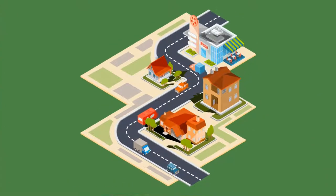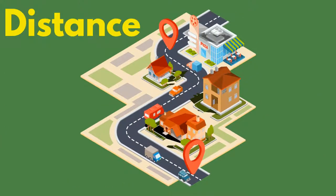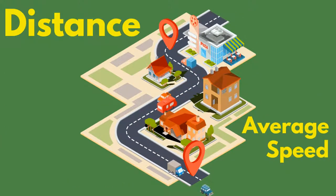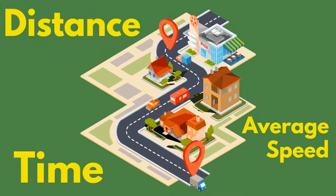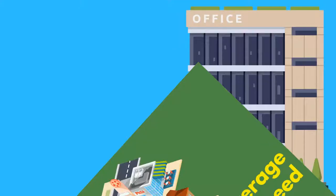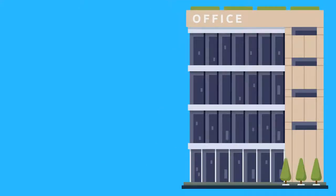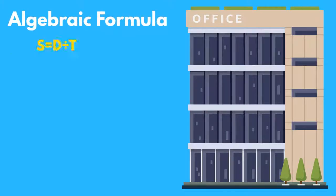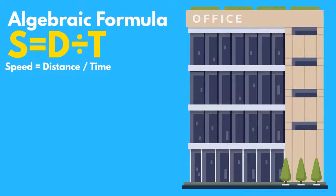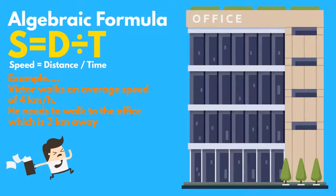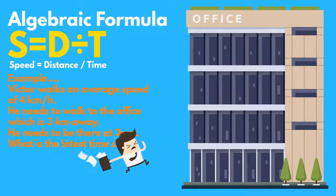When travelling, we use the distance we need to go and our average speed to work out what time we should arrive. This can be represented in an algebraic formula used to calculate our arrival time at college or work. Without it, we may be in trouble.